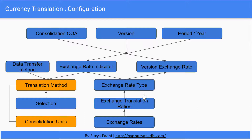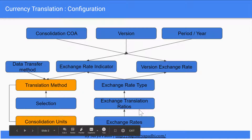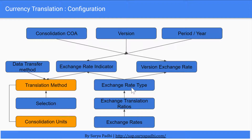Once we create these three steps, then we will assign the exchange rate type to the exchange rate indicator and the first exchange rate version. These two objects are dependent on the dimension, which consists of the consolidation chart of accounts, version, and period.